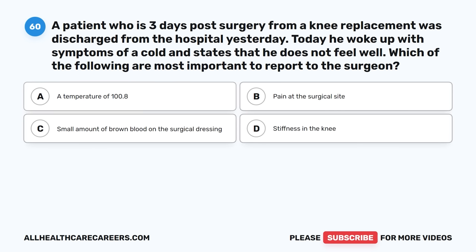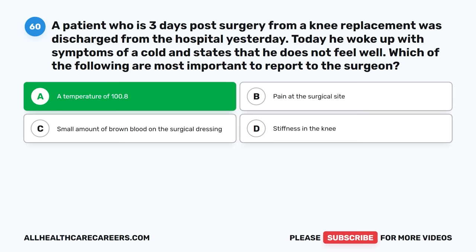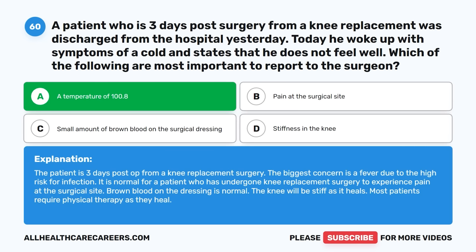Question sixty: A patient three days post-surgery from a knee replacement was discharged yesterday. Today he woke up with cold symptoms and does not feel well. Which is most important to report to the surgeon? A. A temperature of 100.8. B. Pain at the surgical site. C. Small amount of brown blood on the surgical dressing. D. Stiffness in the knee. The correct answer is A, A temperature of 100.8. The biggest concern is a fever due to the high risk for infection. Pain at the surgical site is normal post knee replacement, brown blood on dressing is normal, and knee stiffness is expected during healing. Most patients require physical therapy as they heal.